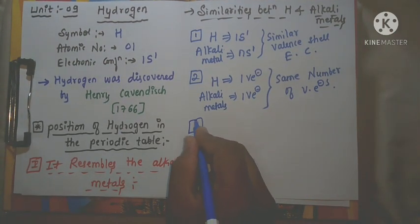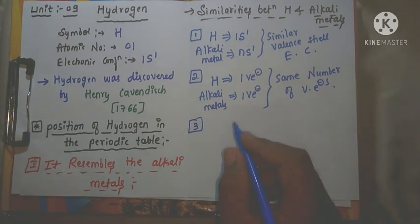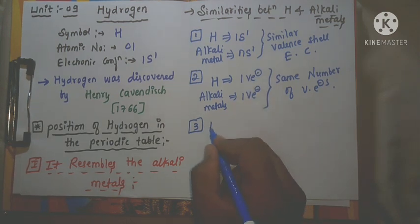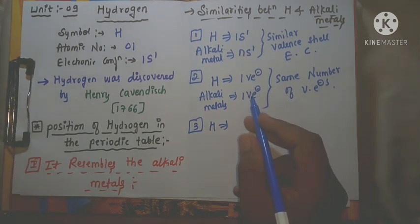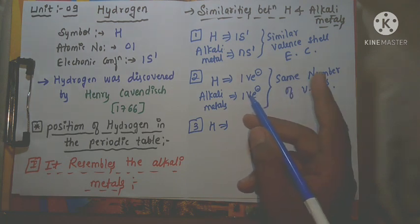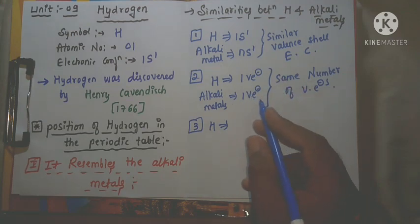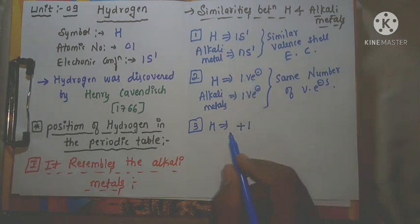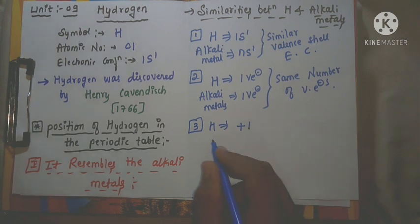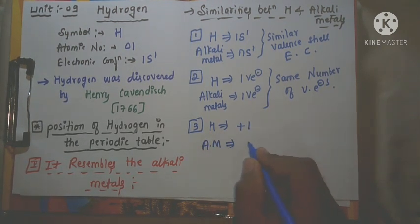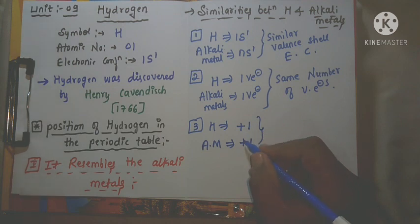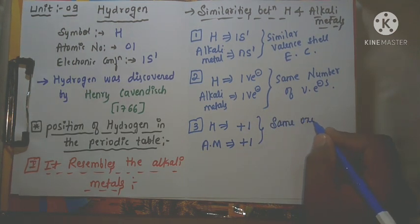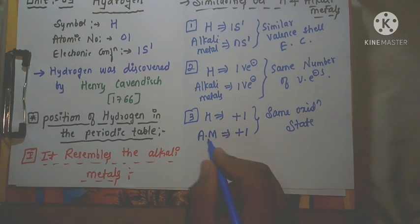The third similarity: hydrogen has one valence electron, so if it loses that electron, the charge becomes +1. Similarly, alkali metals also have only one valence electron, and after losing it, the charge is also +1. Therefore, both hydrogen and alkali metals have the same oxidation state of +1. This is the third similarity.